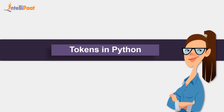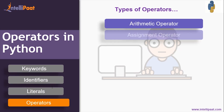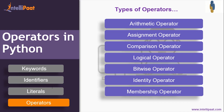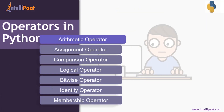In the last session under Python tokens we covered some ground, and today's session we'll be learning about Python token operators. These are specific characters which have a specific task to perform. Based on their function, operators are segregated into seven different types: arithmetic, assignment, comparison, logical, bitwise, identity, and membership operators. Let me discuss them one by one, starting with arithmetic operators.